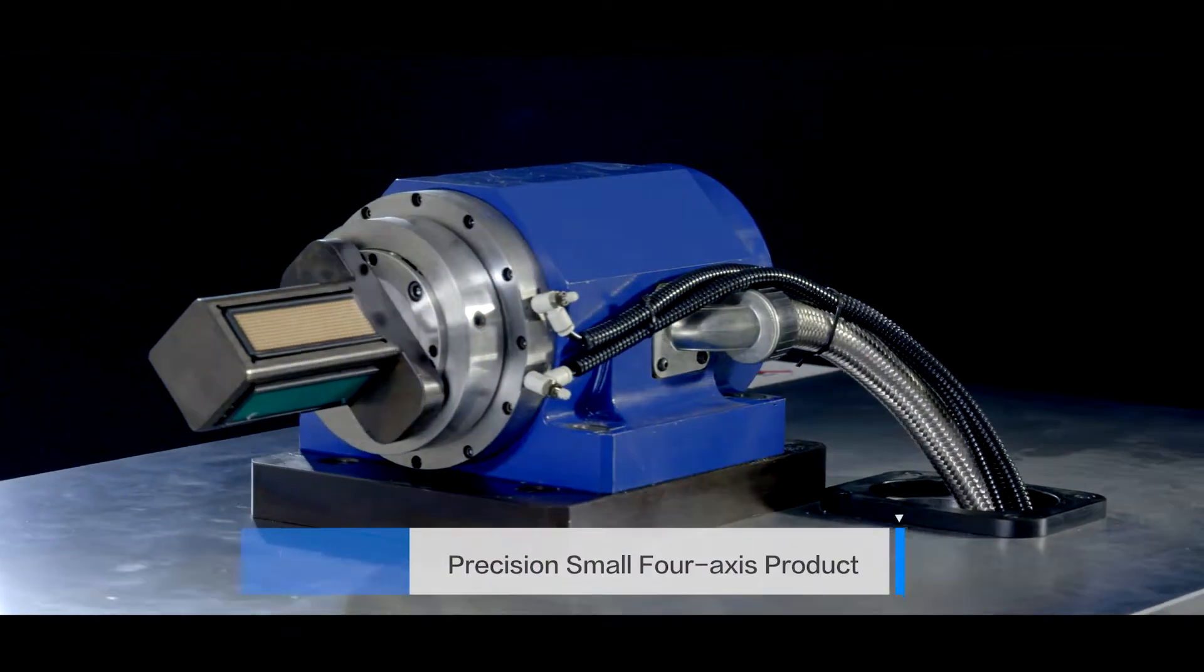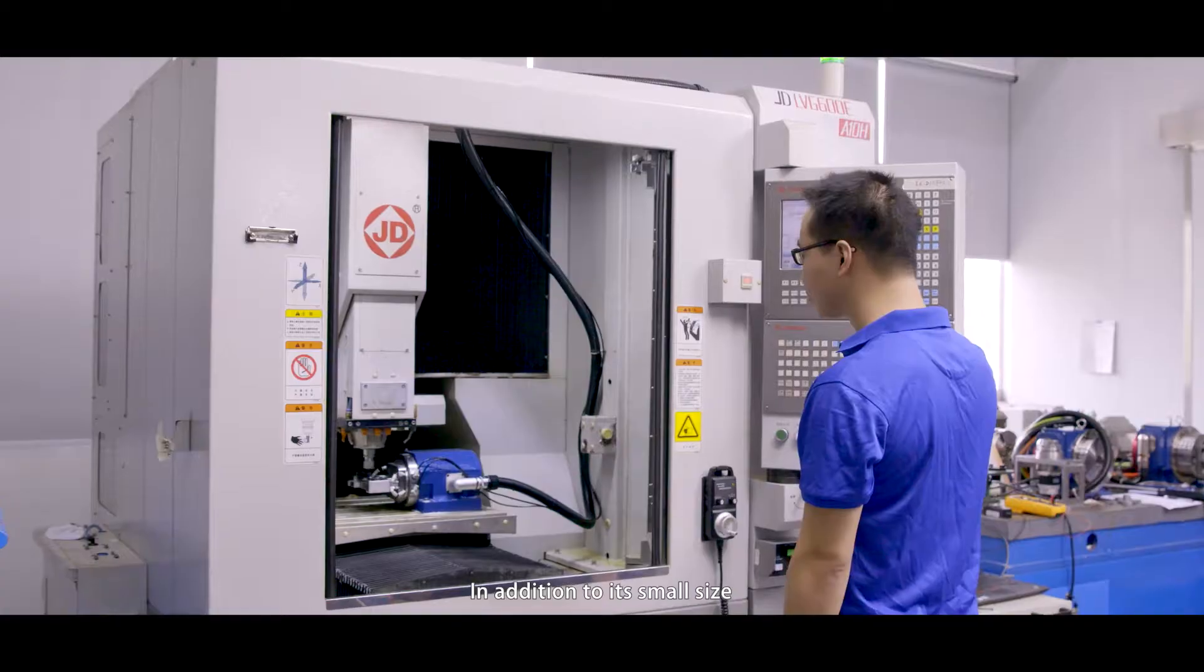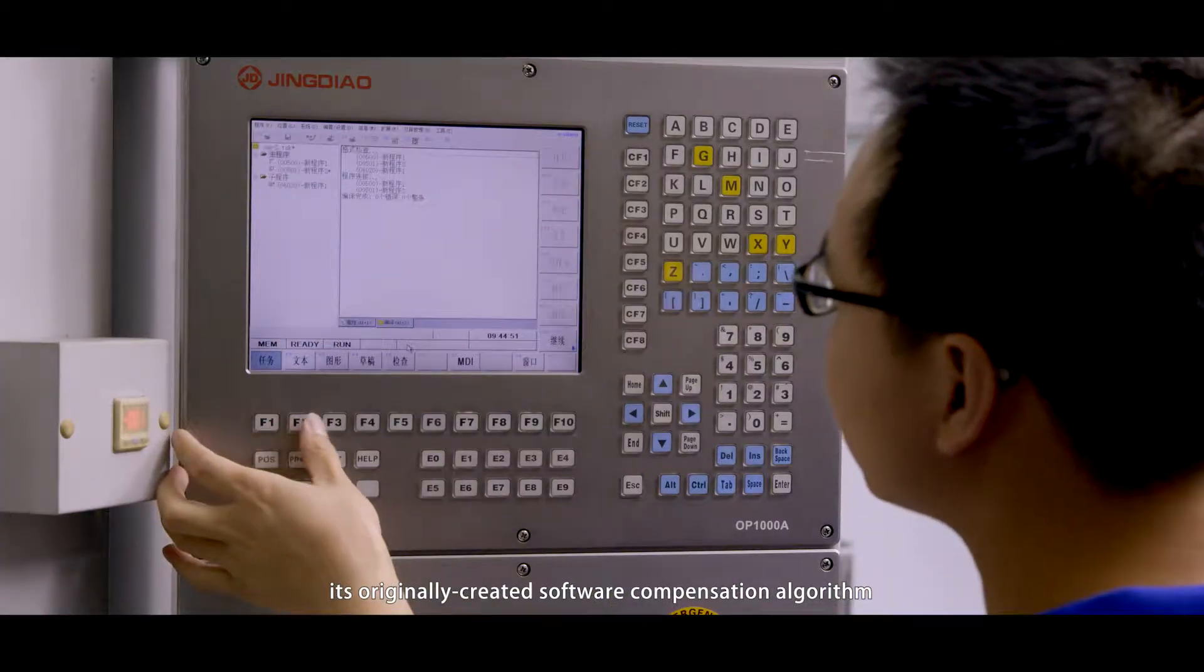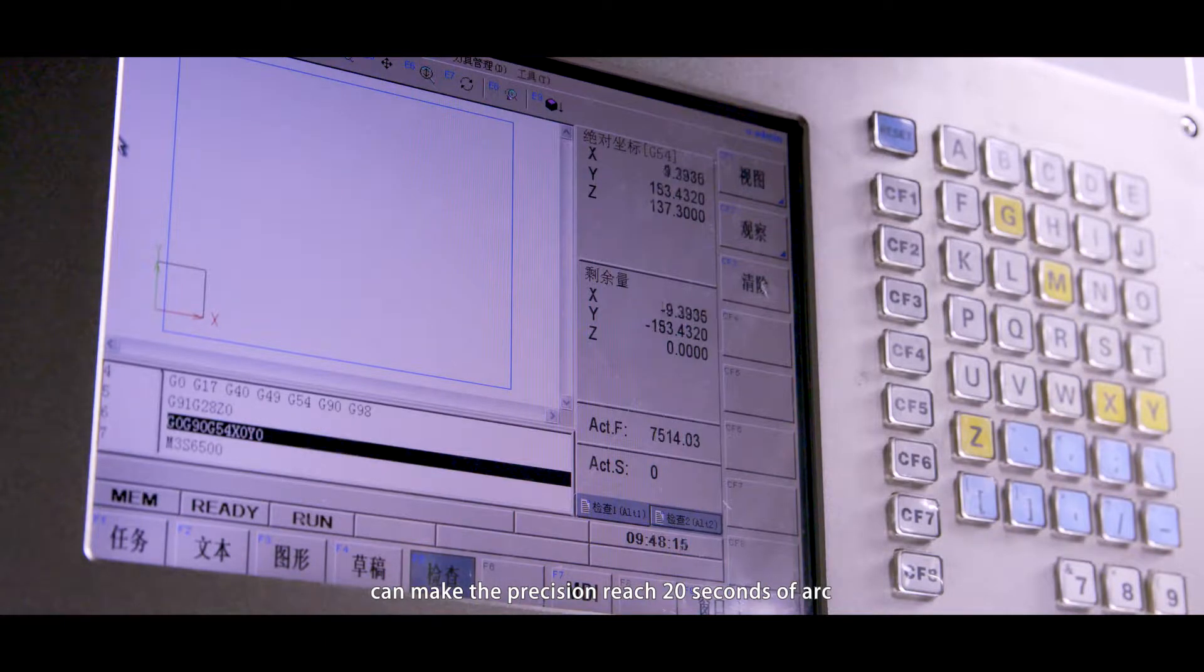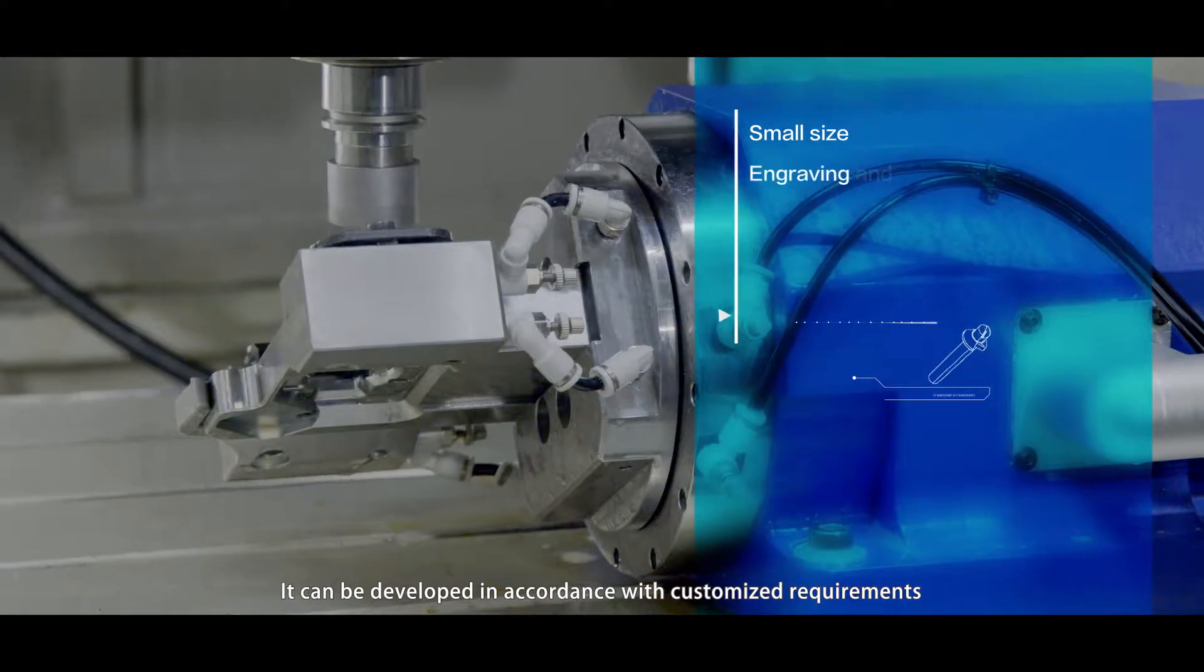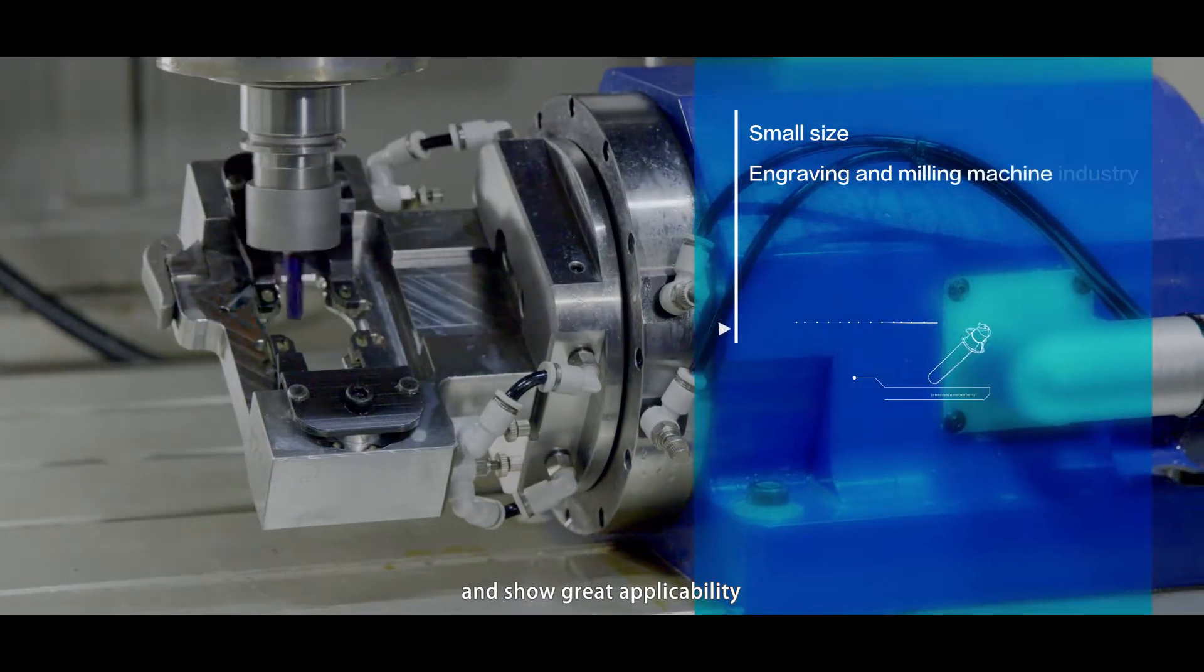Precision Small 4-axis product: In addition to its small size, its originally created software compensation algorithm makes the precision reach 20 arc seconds. It can be developed in accordance with customized requirements and shows great applicability.